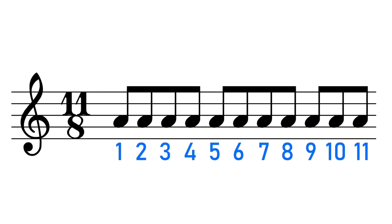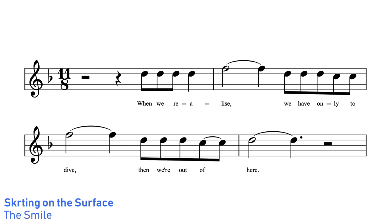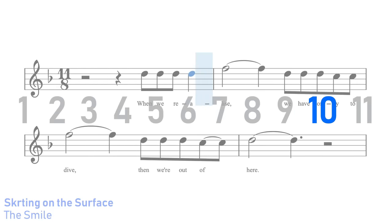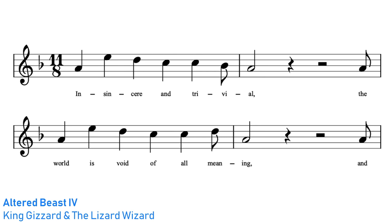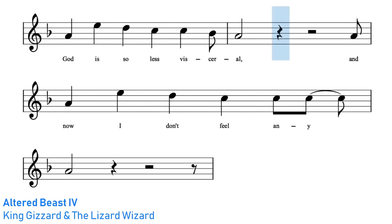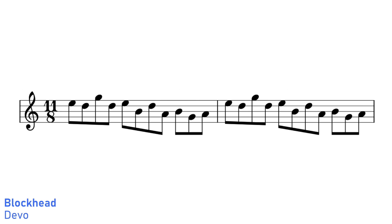If a song is in 11/8 time, it means it has 11 eighth notes in each bar of the music. Skirting on the Surface by The Smile is in 11/8 time, as is Altered Beast 4 by King Gizzard and the Lizard Wizard. And the riff and verse of Blockhead by Devo is also in 11/8.